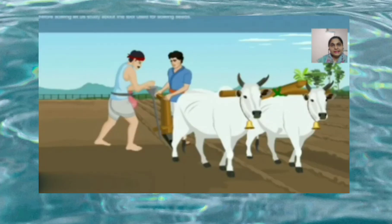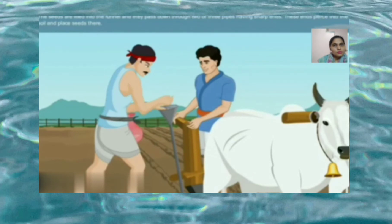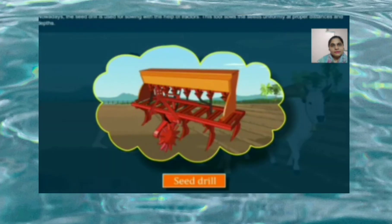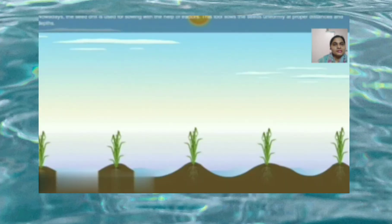Before sowing, let us study about the tools used for sowing seeds. The traditional tool used for sowing seeds is shaped like a funnel. The seeds are filled into the funnel and they pass down through two or three pipes having sharp ends, which pierce into the soil. Nowadays the seed drill is used for sowing with the help of tractors. This tool sows the seeds uniformly at proper distance and depth.